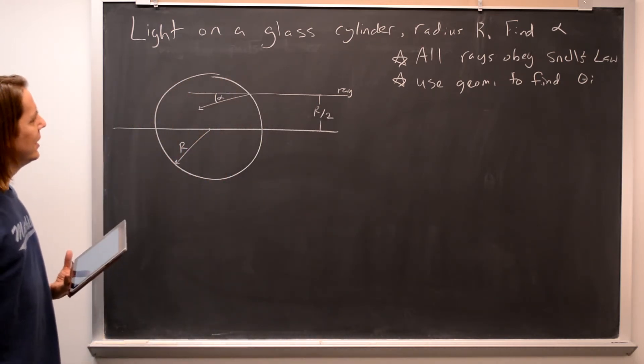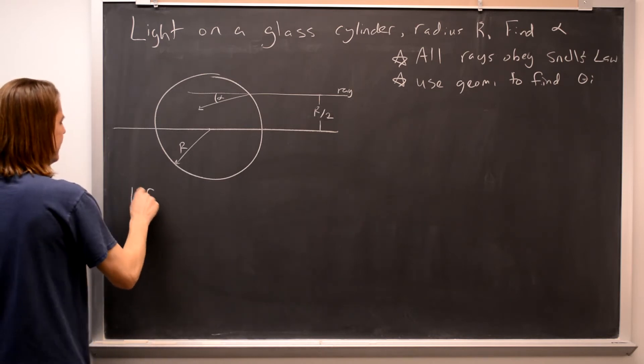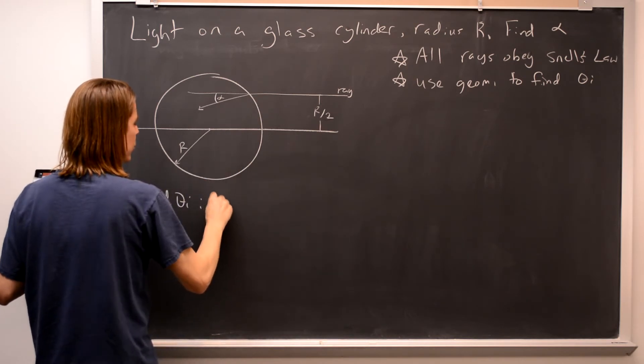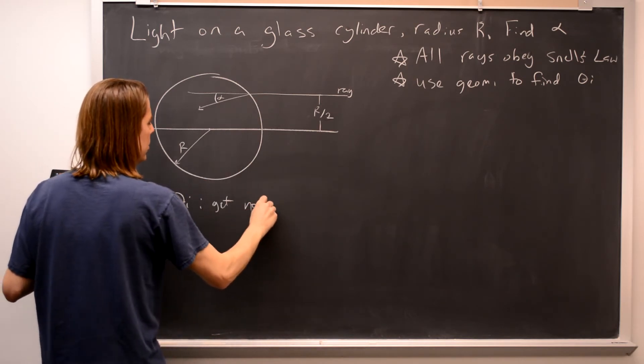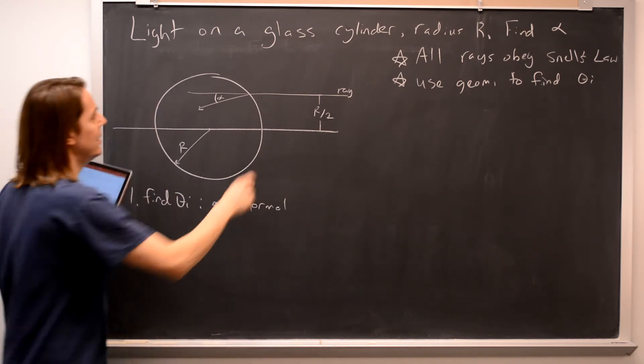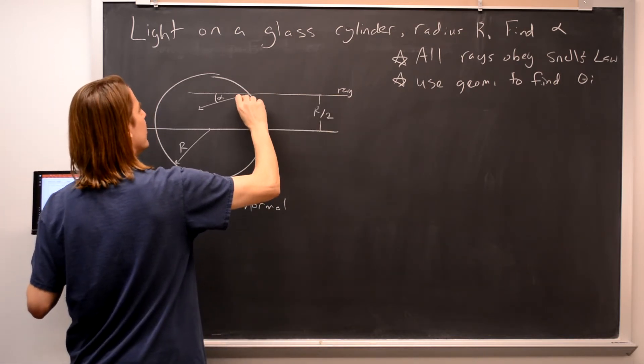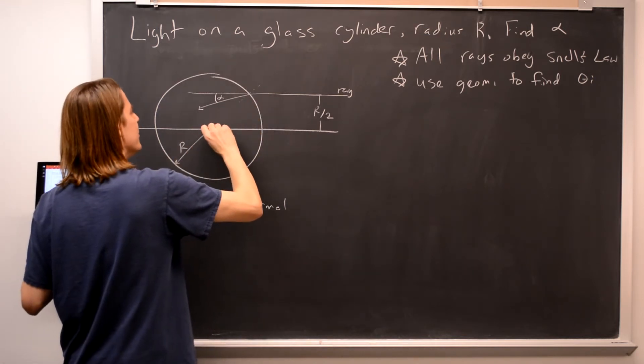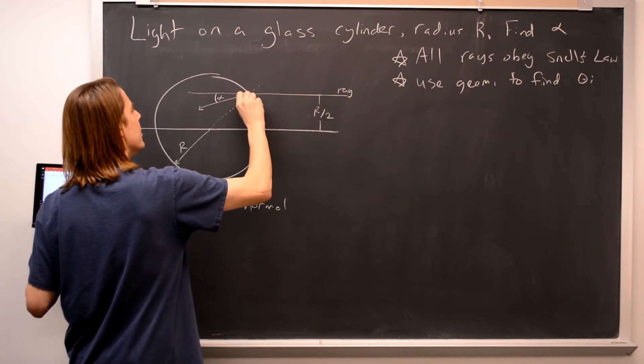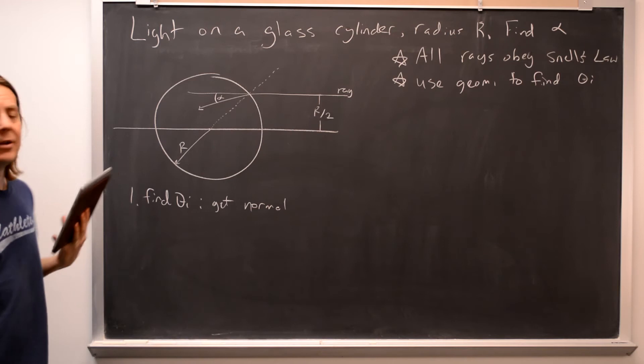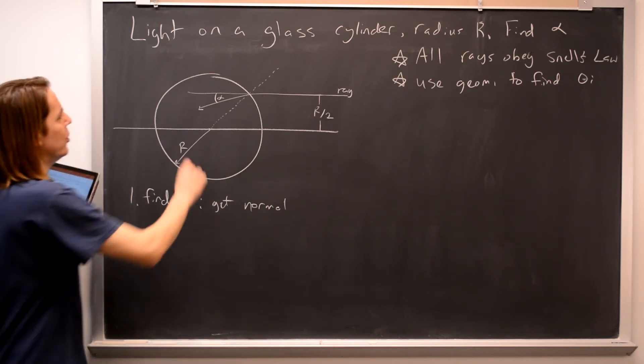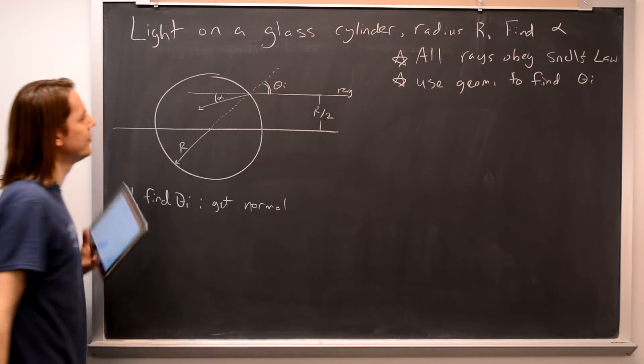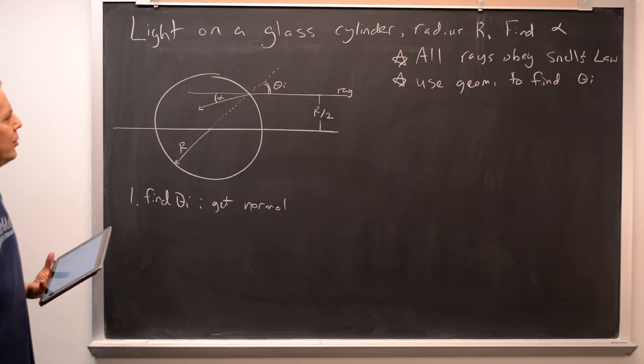So let's look at theta incident. I like to draw it again, so we're going to say find theta i. You can tell you need to get the normal. The definition of the incident angle is the angle between the ray and the normal to the surface. The normal to the surface looks like that, so what you need to see is that you would draw the normal to the surface by coming from the center of the cylinder. So that's just geometry that you need to be able to see. So there's your normal, therefore there is theta i.